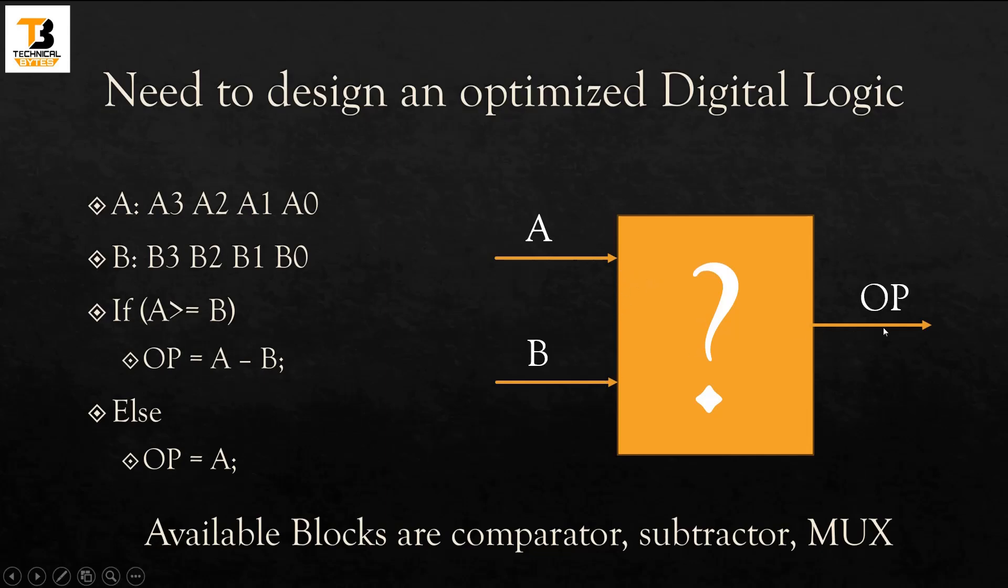Let us assume that A is four bits, having four bits A3 A2 A1 A0, and B is another number which is four bits B3 B2 B1 and B0.